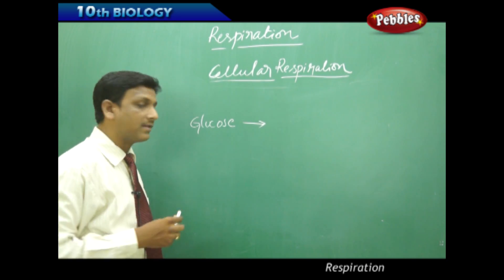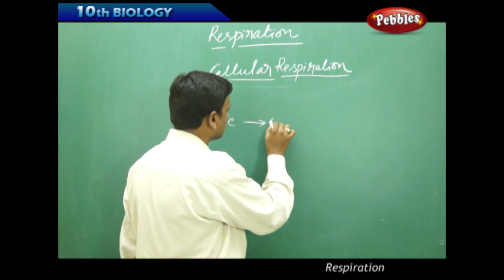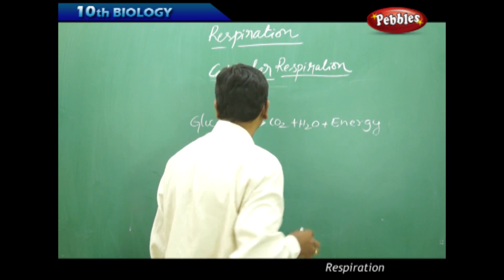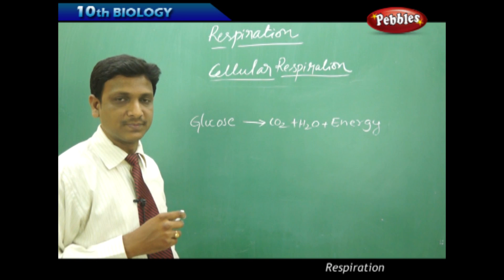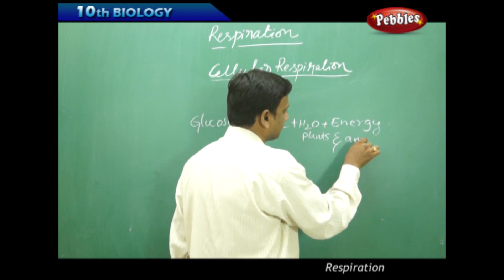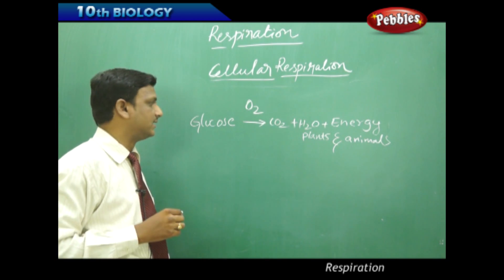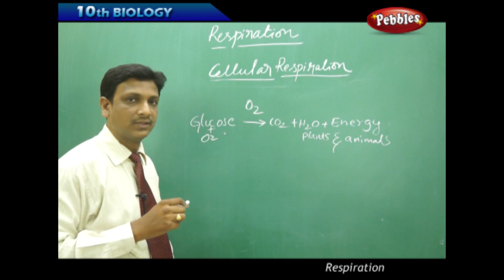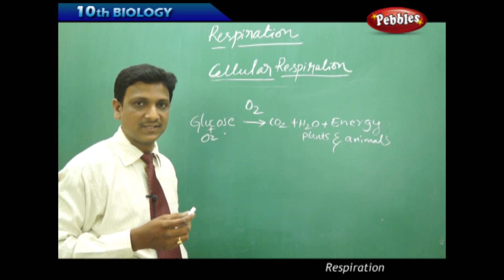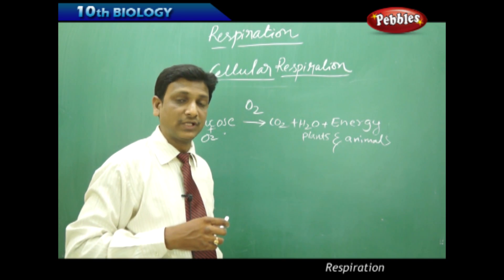In the process of cellular respiration, a glucose molecule produces carbon dioxide plus water plus energy. This aerobic respiration generally takes place in plants and animals, but oxygen is very important — it takes place only in the presence of oxygen. Sometimes, when oxygen is deprived — a condition called oxygen debt — oxygen is not available.